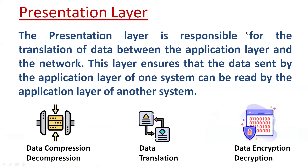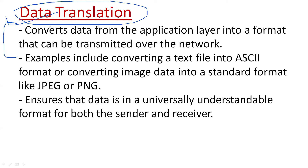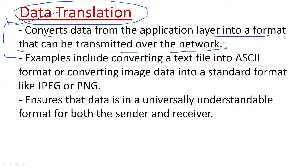These three tasks each have their specific work. Data translation means the conversion of data from one language or code to another type of code. This converts data from the application layer into a format that can be transmitted over the network — for example, into binary language. It can convert a text file into ASCII format or a standard format like JPG or PNG.